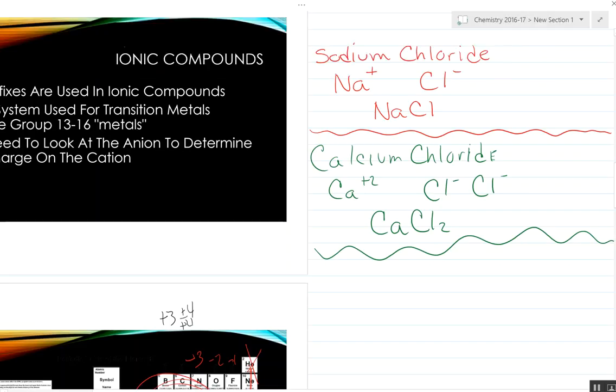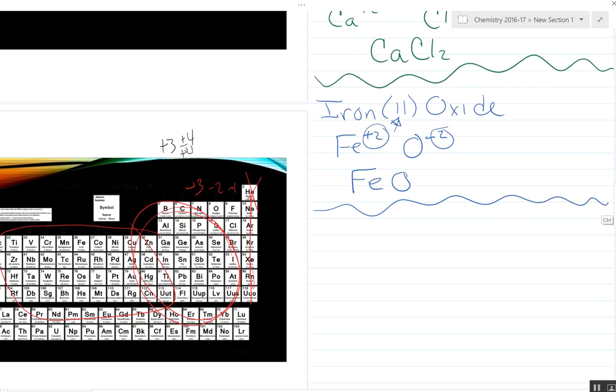As we keep moving along here, we'll go to the stock system examples, and we have iron(II) oxide. We look here, we got iron—the Roman numeral here shows you the charge, so it's plus two—and oxygen, which is minus two ninety-nine point nine percent of the time. And it becomes FeO because we have a plus two, minus two.